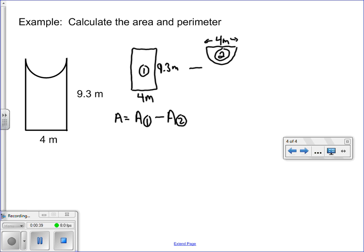Let's first find the area of shape 1. Area 1 is a rectangle, so the formula is length times width, 9.3 times 4. If you plug that into your calculator, you get an area of 37.2 meters squared.